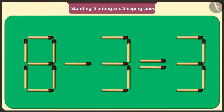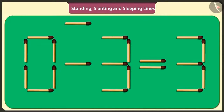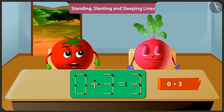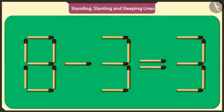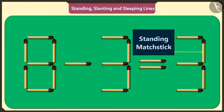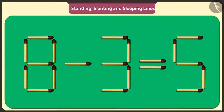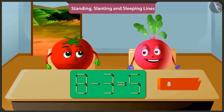Hmm, if I lift this sleeping stick in the middle of number eight and place it above the symbol of subtraction like this, then the puzzle will be solved. Yes, adding three to zero will make three only. Well done. Now I will solve the same puzzle in a different way. If from the answer of the puzzle that is three, I remove this standing matchstick and place it this side, then also the puzzle will be solved. Oh wow. If we subtract three from eight, then we get five.